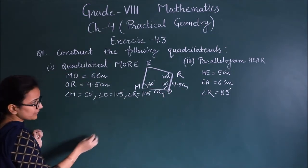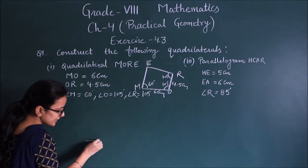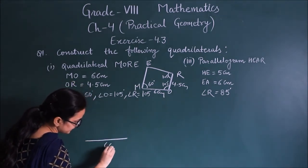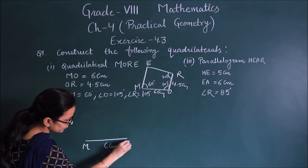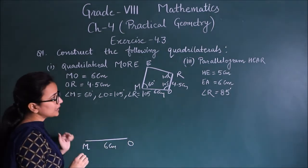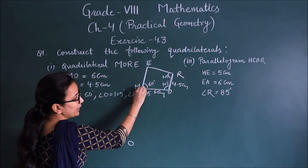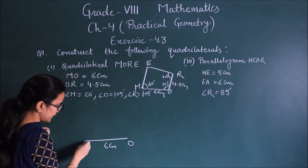Where M angle is 60 degrees, this side is 6 cm, O-R is 4.5, this angle is 105 and this is also 105. So how do we make this one? Let's make this one. First of all, M-O is 6 cm long side. So if you do, M-O is given, you know the angle of 60 degrees? So we have to make this angle of 60 degrees.